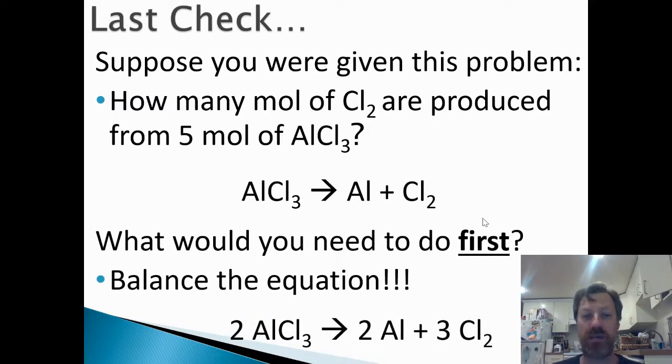Of course, if we were to balance this equation, we get something like this. 2AlCl3 forms 2Al plus 3Cl2. Notice six chlorines on both sides, or six moles of chlorine on both sides. Another way to think about it. So hope this video helps, and good luck with your practice problems.